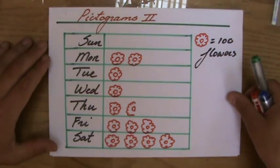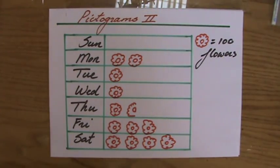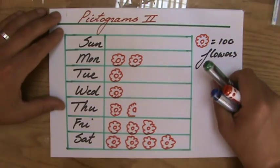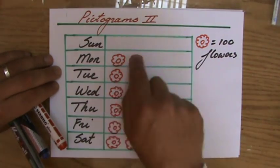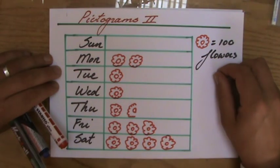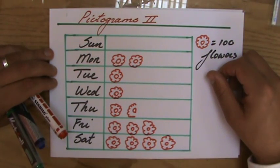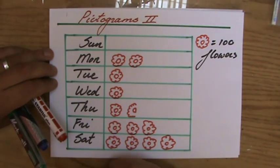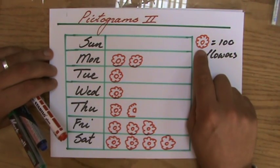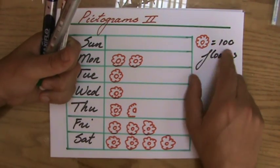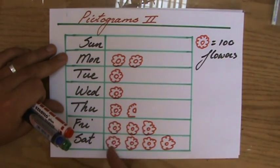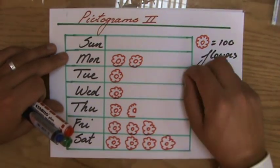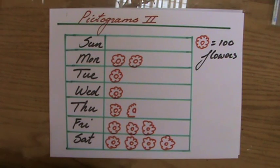So, what are we doing now? A pictogram is just one way to present information. We use pictures — that's why it's called a pictogram. In this example, let's say this is a flower shop. You can see the days of the week with flowers drawn next to each day. A pictogram always has a key next to it — or above or below — stating that each picture represents, in this case, 100 flowers. When creating one yourself, make sure the pictures are nicely aligned so you can draw conclusions easily.